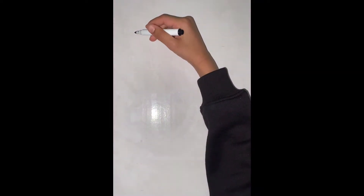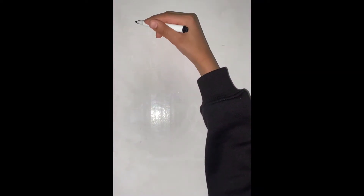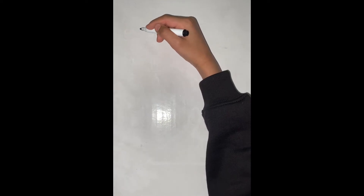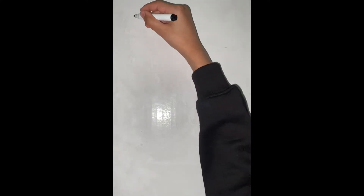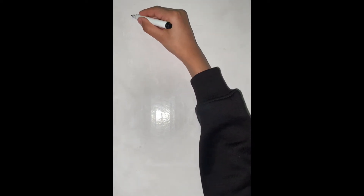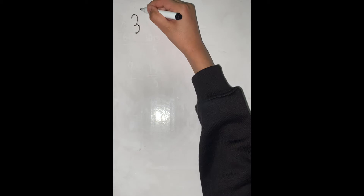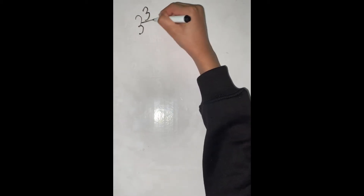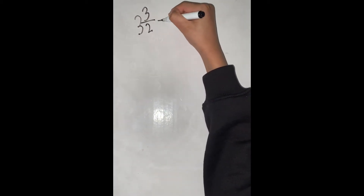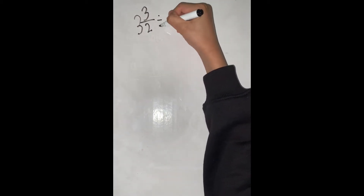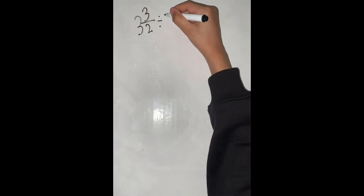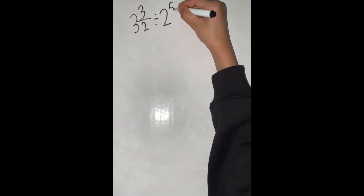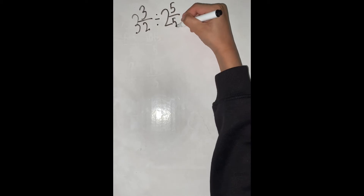So this is dividing mixed numbers part 1. Let's do question number 1: 3 and 3 over 2, divided by 2 and 5 over 5.